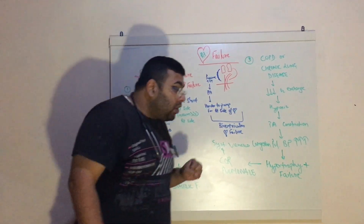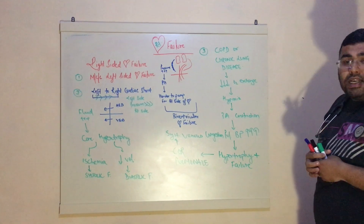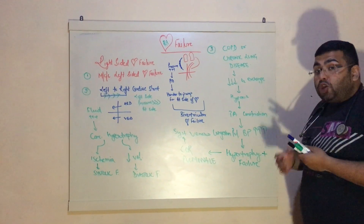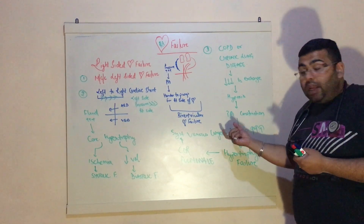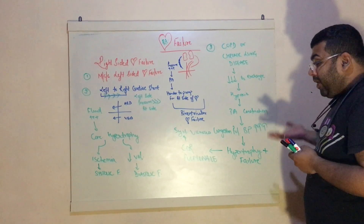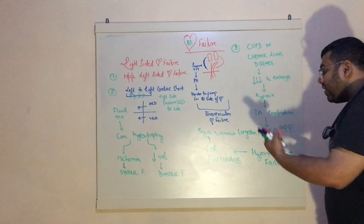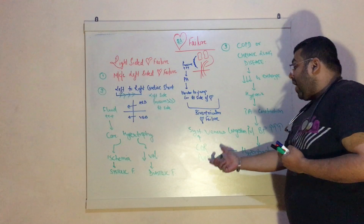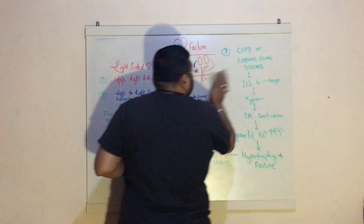The third reason is COPD — chronic obstructive pulmonary disease or chronic lung disease. In chronic lung disease, there is decreased exchange of oxygen, which leads to hypoxia. Less oxygen going into the body further causes constriction of pulmonary arterioles, which increases blood pressure in the pulmonary region. Pulmonary blood pressure will be high, leading again to hypertrophy and failure of the right side of the heart — and together we call this cor pulmonale. Cor pulmonale leads to systemic venous congestion.